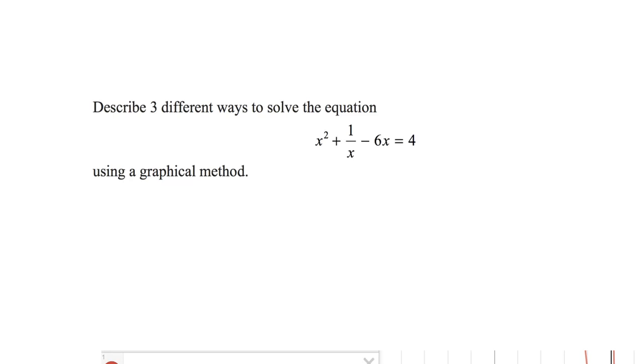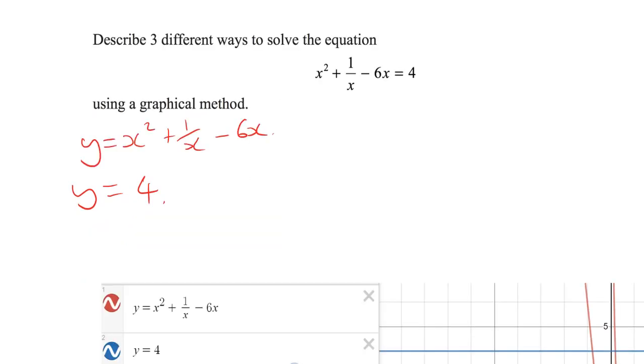I can certainly see one way, because just like in the last example, we could plot y is equal to the left and y is equal to the right-hand side of that equation and work out the solutions. So y equals x squared plus 1 over x minus 6x could be plotted as a graph on your graphical calculator and the line y equals 4. So let's just jump in and do that and see what happens.